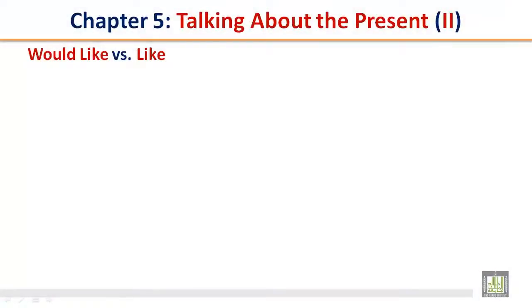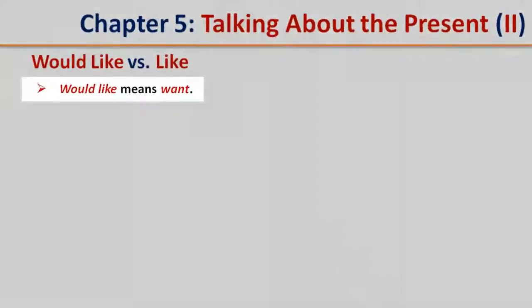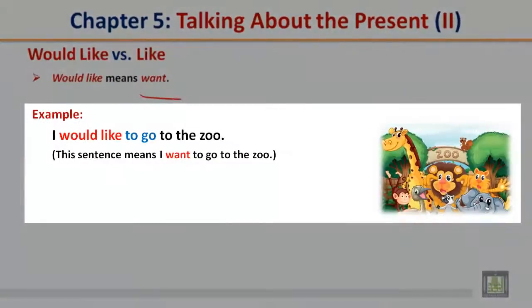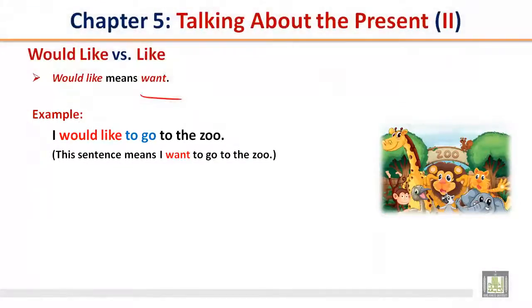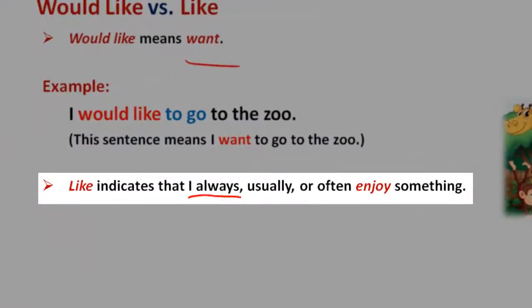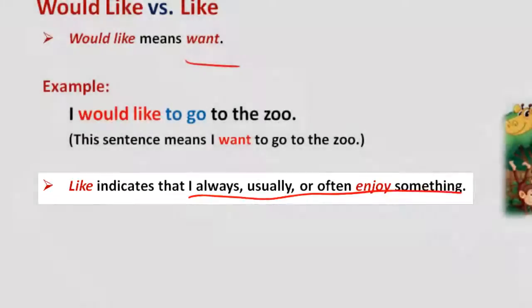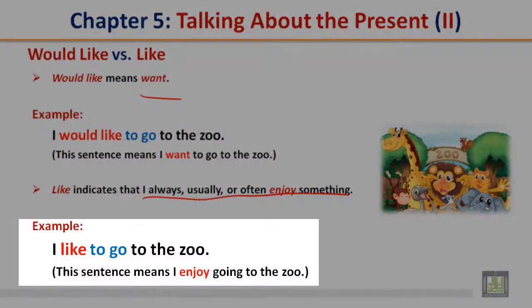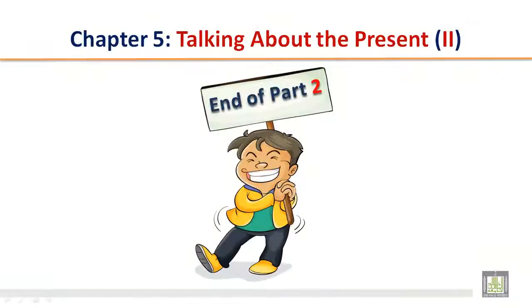Would like versus like. Would like means want. I would like to go to the zoo. This sentence means I want to go to the zoo. Like indicates that I always, usually, or often enjoy something. I like to go to the zoo. This sentence means I enjoy going to the zoo. End of part two.